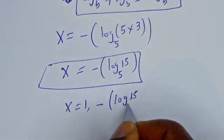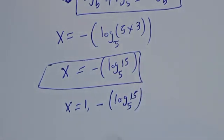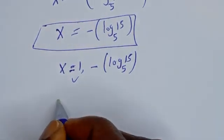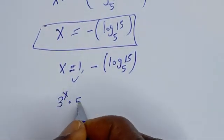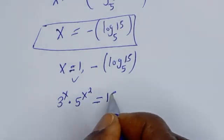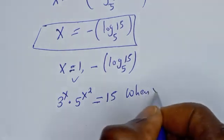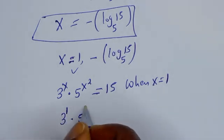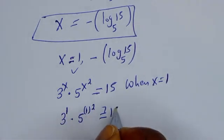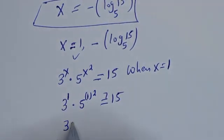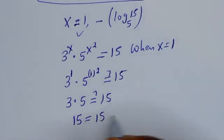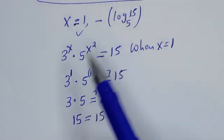Therefore our final answers are s = 1 and s = −log₁₅ base 5. Let's verify with s = 1: the original equation is 3^s × 5^(s²) = 15. When s = 1: 3¹ × 5^(1²) = 3 × 5 = 15, which equals 15. This is true, confirming our answer. I hope you enjoyed the video — thank you for watching, don't forget to like, share, comment, and subscribe to my channel. Bye bye!